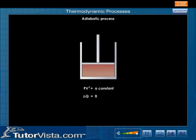Substituting the value of delta Q in delta Q equals delta U plus delta W, zero is equal to delta U plus delta W. Therefore, delta W is equal to minus delta U.